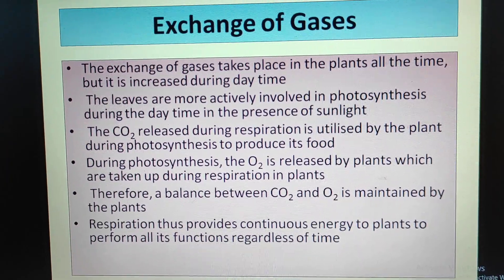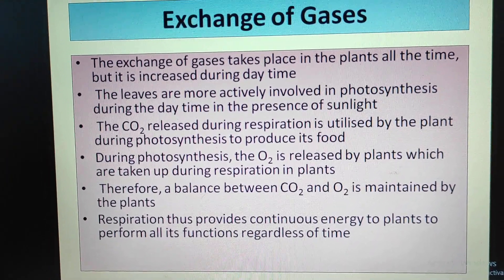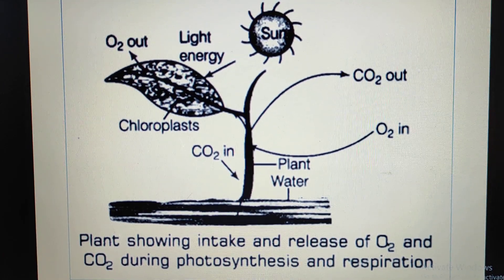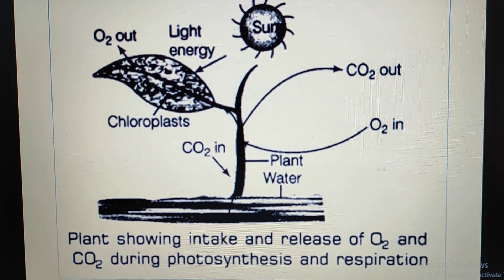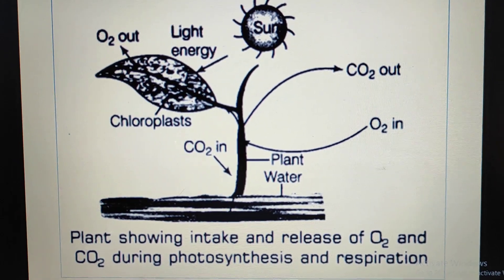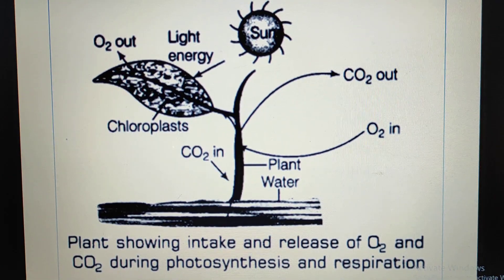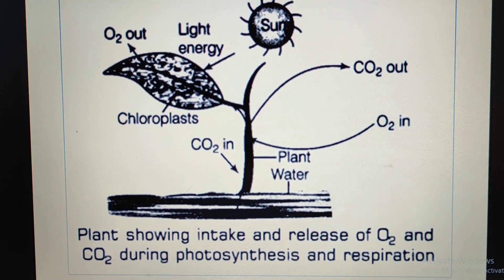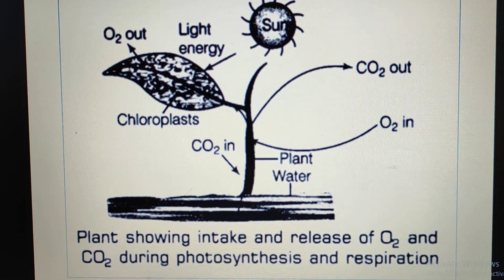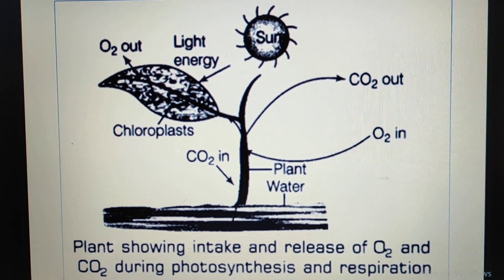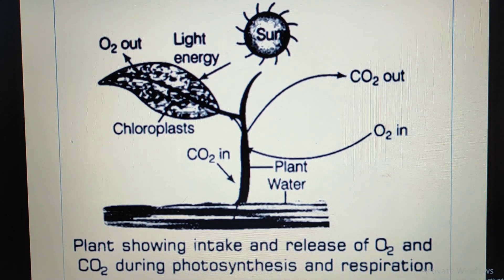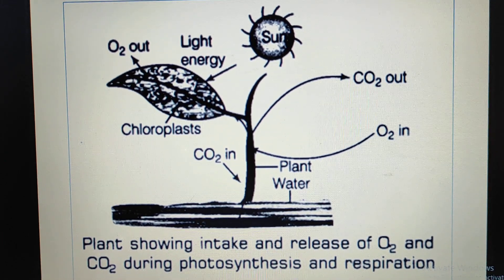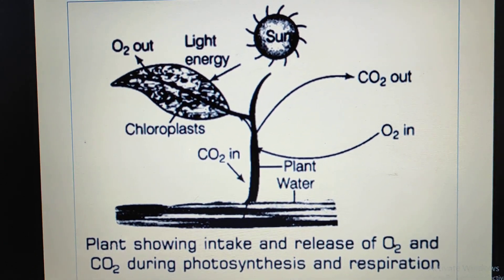Respiration provides continuous energy to plants to perform all its functions regardless of time. In plants, both processes go side by side — photosynthesis takes place during the daytime and respiration takes place day and night. During photosynthesis, plants take in carbon dioxide and release oxygen, and during respiration, they take in oxygen and give out carbon dioxide. As a result, the carbon dioxide and oxygen balance is maintained in the atmosphere. I hope you all have understood the lesson. That's all for today.